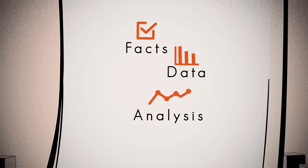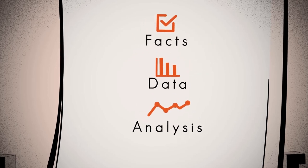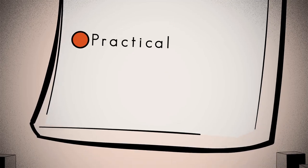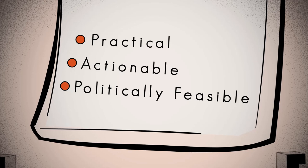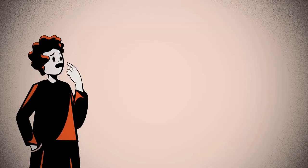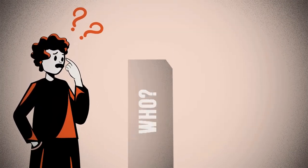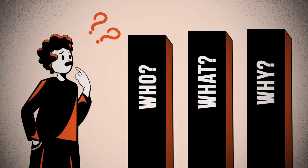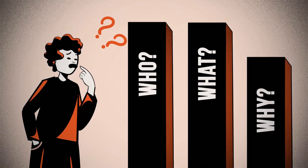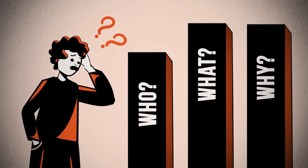The body of the paper should be written in a way that makes the argument as convincing as possible. The policy recommendations should be practical, actionable, and politically feasible. This means that the recommendations should make explicit the who, what, and why — who should do what, and why — and that the course of action is spelled out clearly.